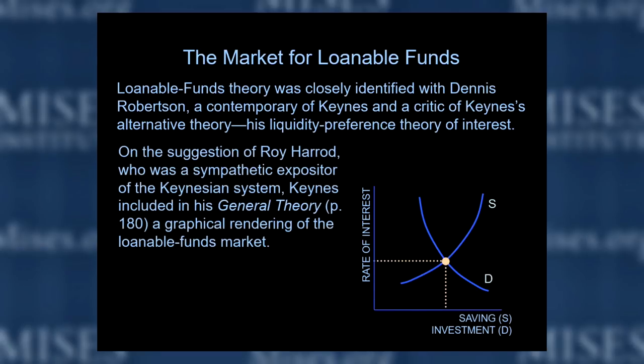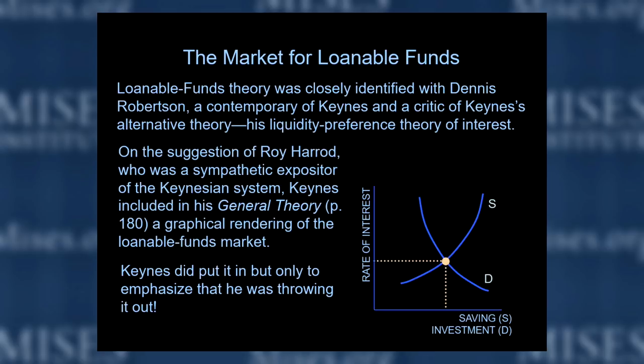On the suggestion of Harrod, who was a sympathetic expositor of the Keynesian system, Keynes included in his General Theory — on page 180 — a graphical rendition of the loanable funds market. Harrod told him he needed to put that in, and he did put it in, but only to emphasize he was throwing it out, because it interfered with his liquidity preference theory of interest. And worse yet, if you actually look at page 180, you'll see that he fouled up — he has the curves curving the wrong way, and he forgot to label the axes.